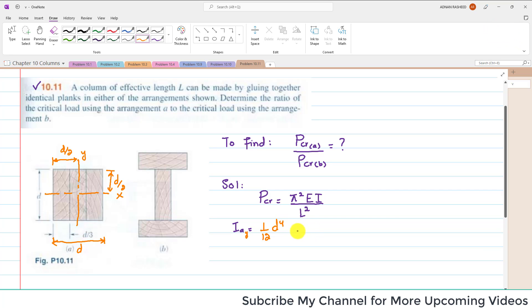You can put it in the above equation, so you will get P_critical for part A equals π²E·D⁴ divided by 12·L_E². The effective length is used, so we use L_E. This is P_critical for part A.